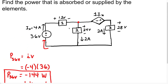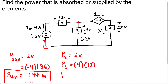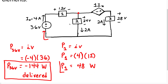For box 1, P1 equals IV. We know the current is 4 amps, which is Ix, and it flows through the positive terminal of this element. So we have positive 4 amps and the voltage is 12 volts. Therefore, the power in box 1 is going to be 48 watts. Because it's a positive power, it is absorbing power.